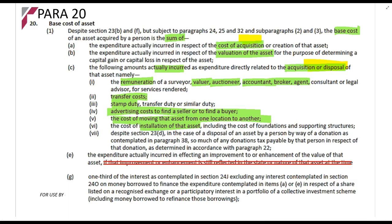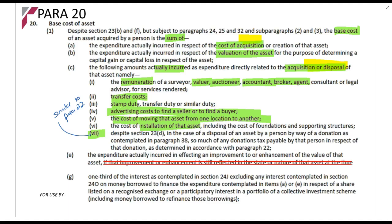Sub-paragraph 7 is similar to paragraph 22 — it works in exactly the same way as donations tax. When you make a donation, the donor needs to pay the donations tax, but if the donor doesn't pay it, the donee must pay it. So if you are the donee and someone gave you an asset and you had to pay the donations tax, you can add that amount, calculated the same way as under paragraph 22. Additionally, any expenditure incurred in effecting an improvement to the asset — not repairs, but improvements. Improvements are capital expenditure that increases the value or usage of the asset. For example, adding a new bathroom to a house is an improvement; painting the house is a repair.